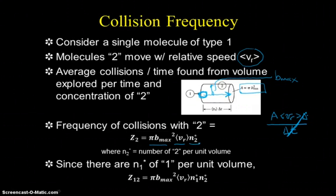The next part is we want to know the total number of collisions in the system between particles of type 1 and particles of type 2. We need to multiply by the concentration of these particles because I was only considering one when I derived Z_2. That gives me Z_12, the frequency of collisions between particles of type 1 and type 2, given by π b_max² times the average relative velocity times the products of the concentrations of each of the particles. This is the number of molecules per unit of volume of the system.